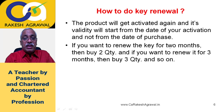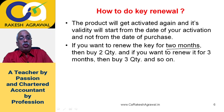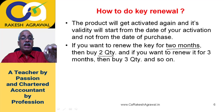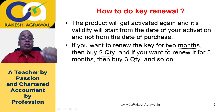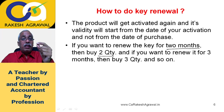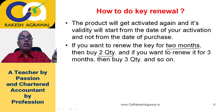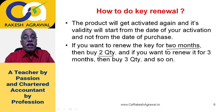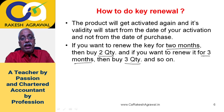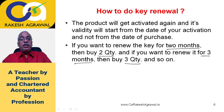If you want to renew the key for two months, buy two quantity. When you go for the purchase option, it asks you to enter the quantity — the default quantity is set as one. So if you want two months, go for the one-month key renewal option but change the quantity to two. Naturally the amount will also get doubled. For three months, enter quantity three, and so on. This way the one-month key renewal can be converted into two, three, or four months by changing the quantity.